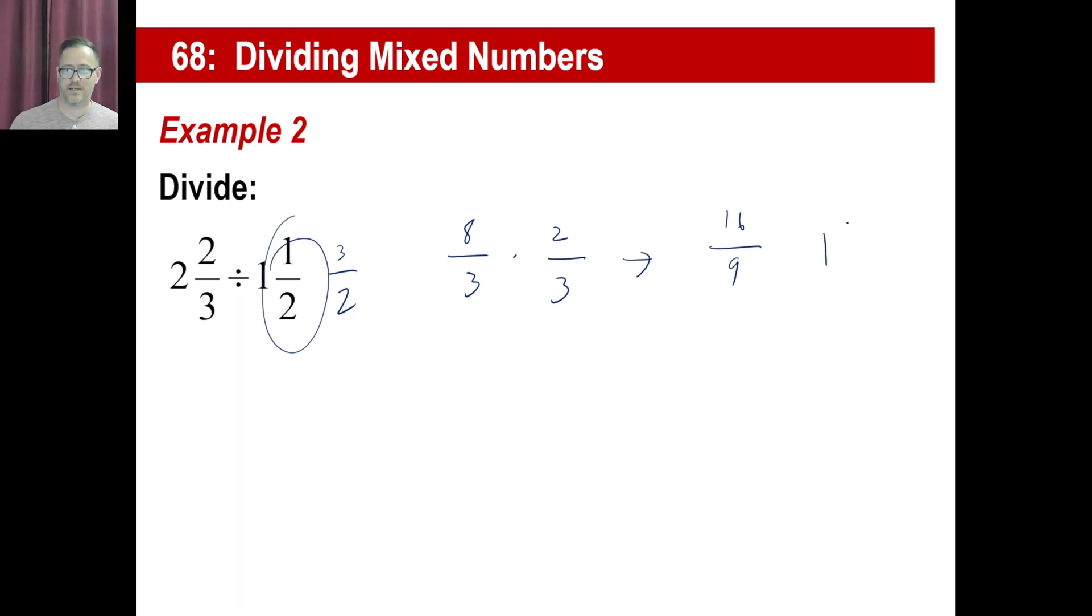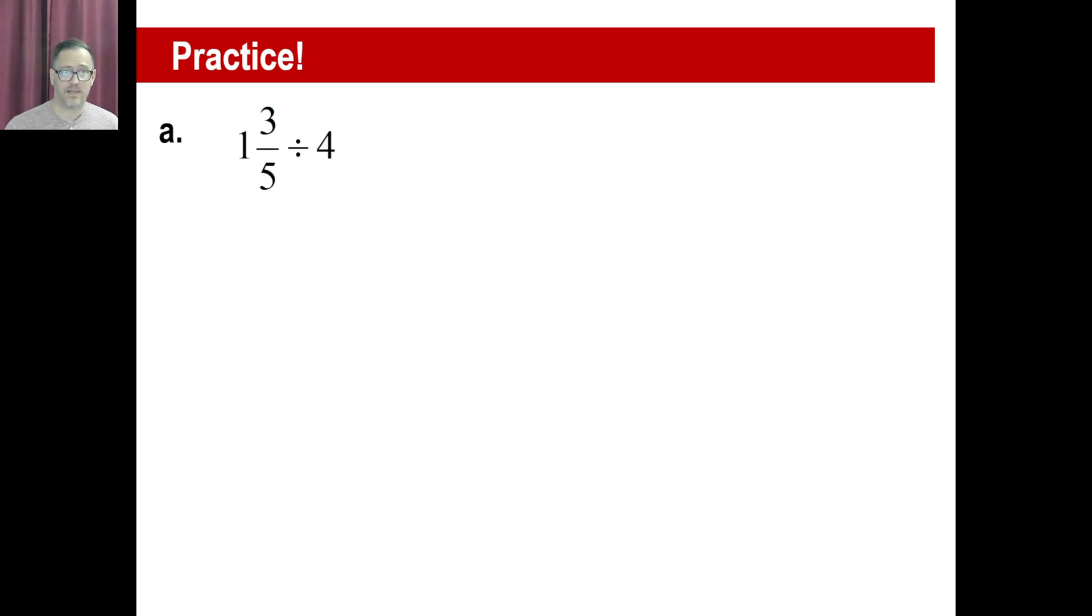The answer is this is 1 and then there's 7 left over, so 1 7/9. That's dividing mixed numbers. Now, in your problem set, they're gonna have a couple of ofs. What does the word of mean to do in arithmetic?